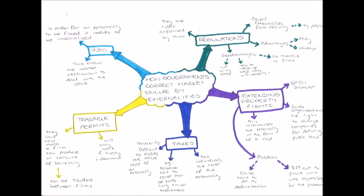Welcome to this microeconomic video on how governments correct market failure by externalities, which is slightly more complicated than simply correcting market failure. If you remember back to the externalities video, one part of the definition was that externalities are external to the pricing mechanism — that's why they're called externalities. So to correct an externality, we need to internalize it — expose it to the pricing mechanism so it becomes susceptible to it.